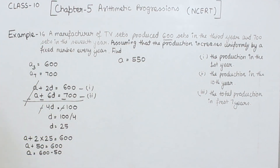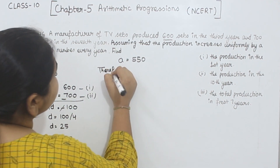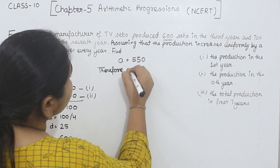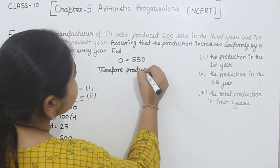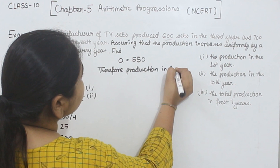So the production in the first year is equal to 550. This is the solution for part 1. Therefore, production in the first year = 550 TV sets.